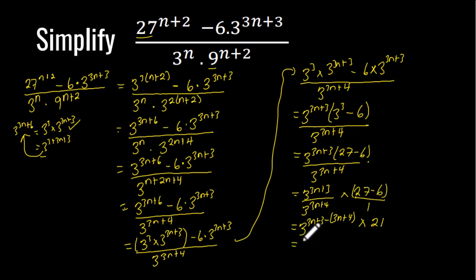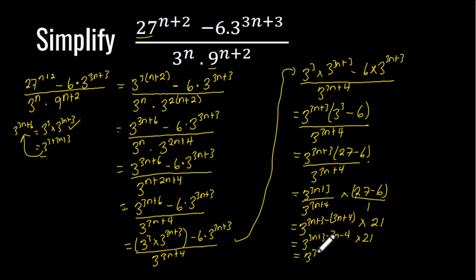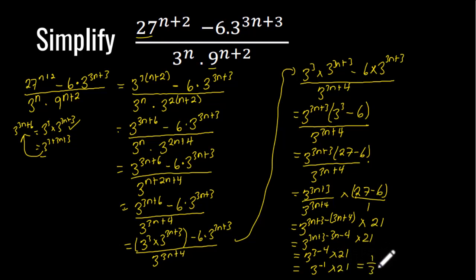Expanding the exponent: 3n+3 minus 3n minus 4. The 3n terms cancel, leaving 3 exponent (3 minus 4), which is 3 exponent negative 1. This equals 1/3 times 21, which gives us 7, since 21 divided by 3 is 7.